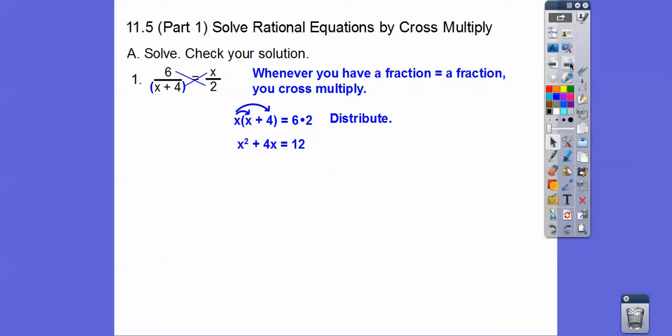And then this is a quadratic equation. So quadratics means it's squared. So we want this to be 0, not 12. So let's subtract 12 from both sides. And then we're going to go ahead and factor.